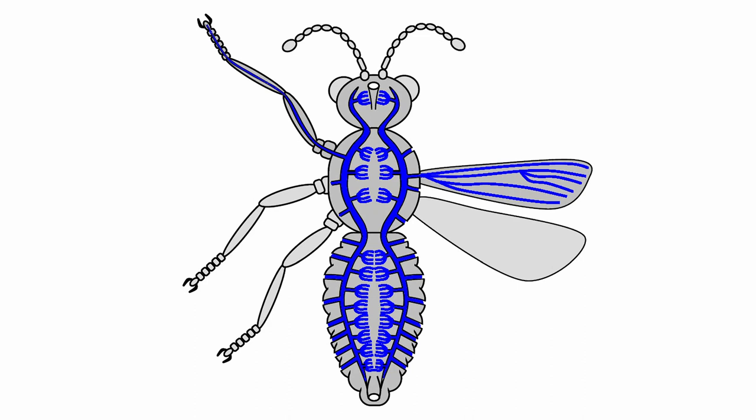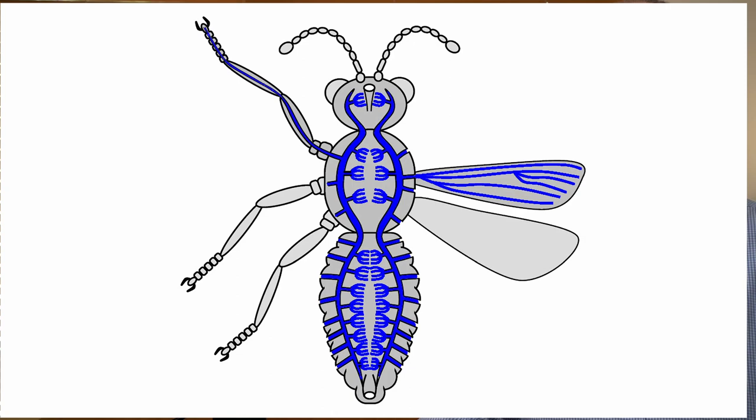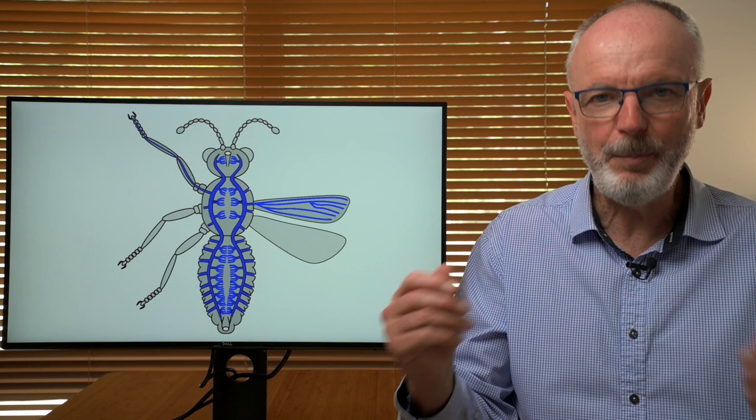The internal tracheal system carries oxygen directly to an insect's tissues, even out along the wings and the legs. And the tracheal system removes carbon dioxide, which is expelled back out through the spiracles.